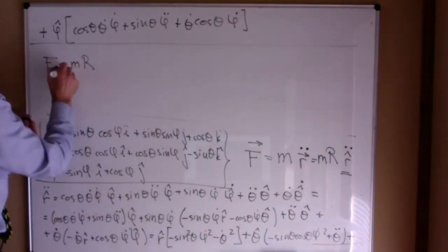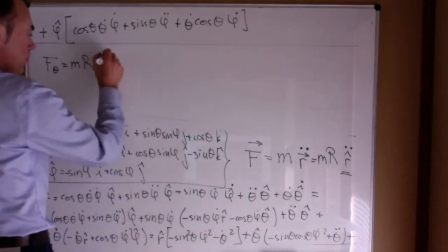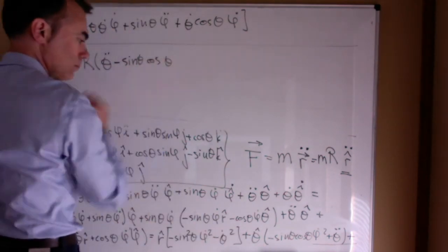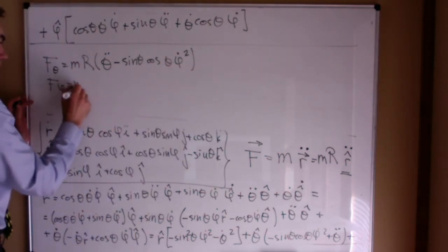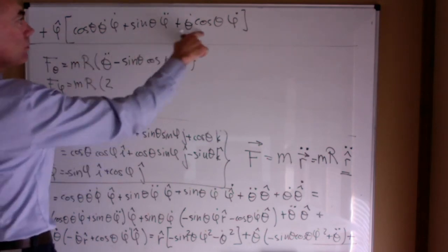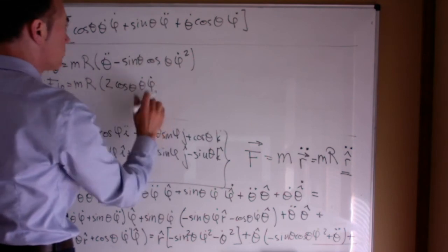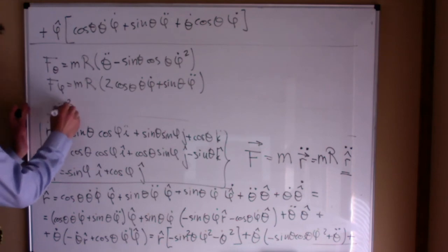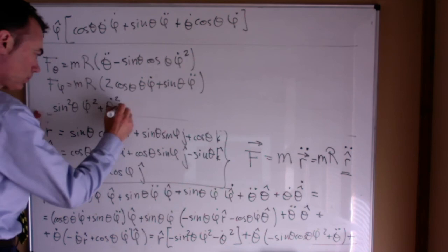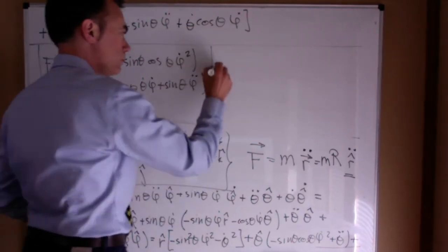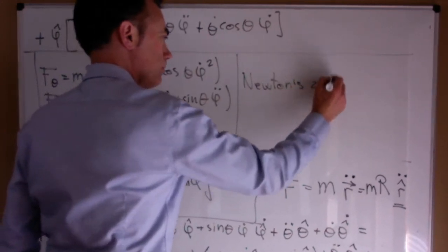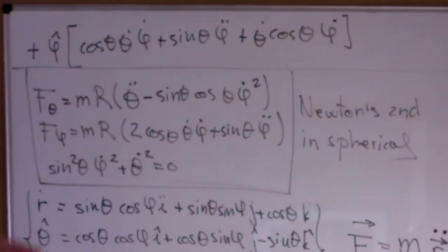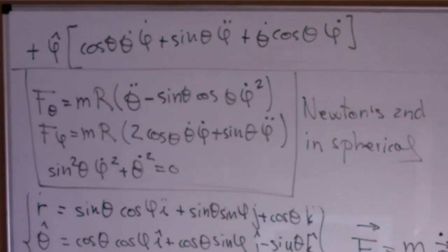With this, we can now write the equations of motion. F_theta equals m times the acceleration in the theta direction. F_phi equals m times the acceleration in the phi direction. And because there is no acceleration in the r direction, phi-dot-squared sine-squared(theta) + theta-dot-squared equals zero. These are the general equations of motion of a particle constrained to move on the surface of a sphere. Once we know the forces F_theta and F_phi, we can solve the differential equations and find the motion of the particle.